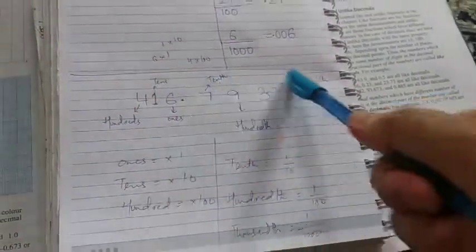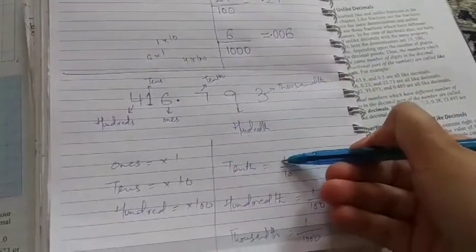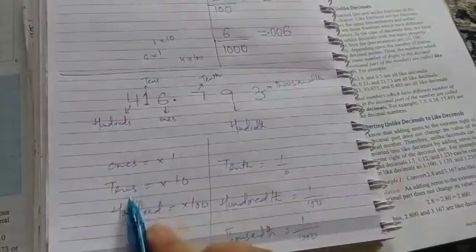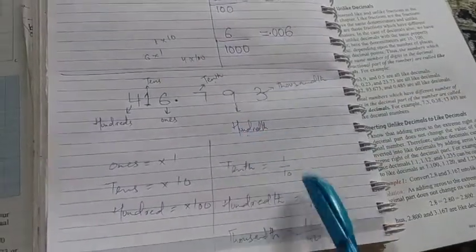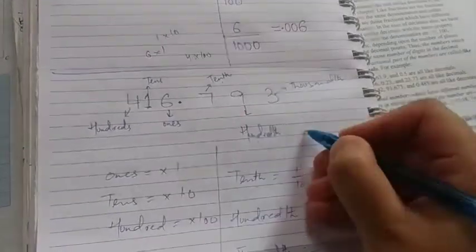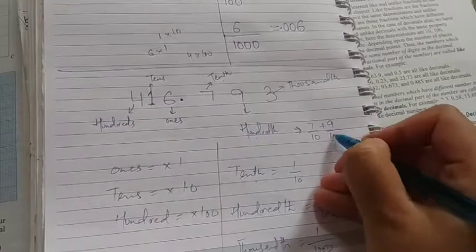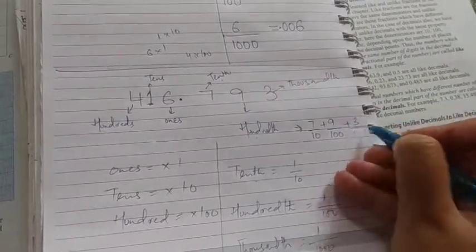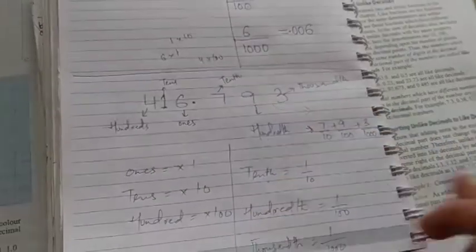Similarly, when these are introduced, 10th ka matlab hota hai, 1 divided by 10. Yehaan peh 10s tha, multiply by 10, but yehaan peh hota hai, divided by 10. Similarly, 100th will be 1 upon 100, 1000th will be 1 upon 1000. That means, iska matlab hai, it is, 7 upon 10 plus 9 upon 100 plus 3 upon 1000th. Toh yeh, isko hum, aise karte hai.